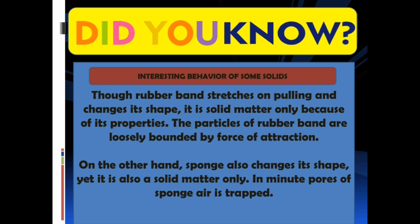Did you know? Interesting behavior of some solids. Though a rubber band stretches on pulling and changes its shape, it is solid matter only, because of its properties — the particles of a rubber band are loosely bounded by force of attraction. On the other hand, sponge also changes its shape, yet it is also a solid matter only, because in the minute pores of sponge, air is trapped.